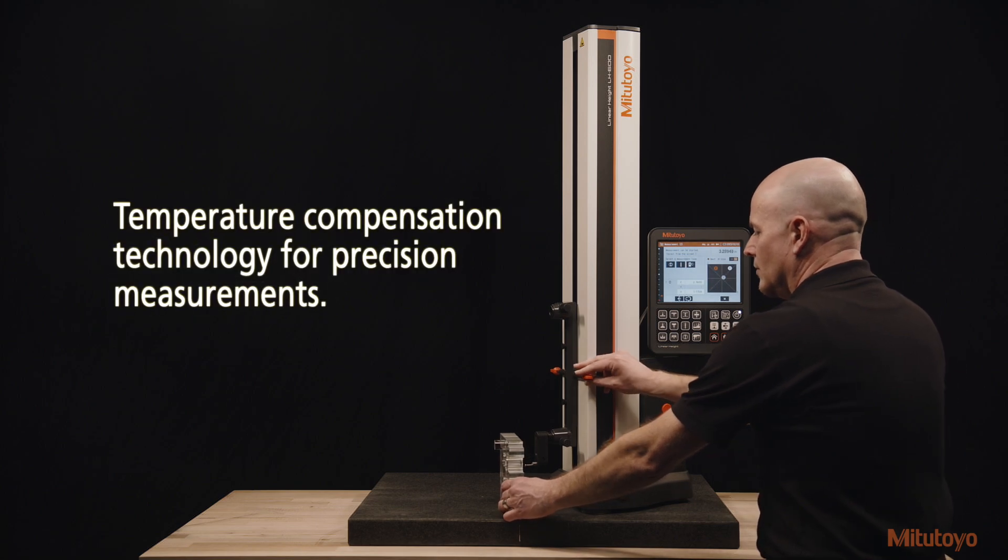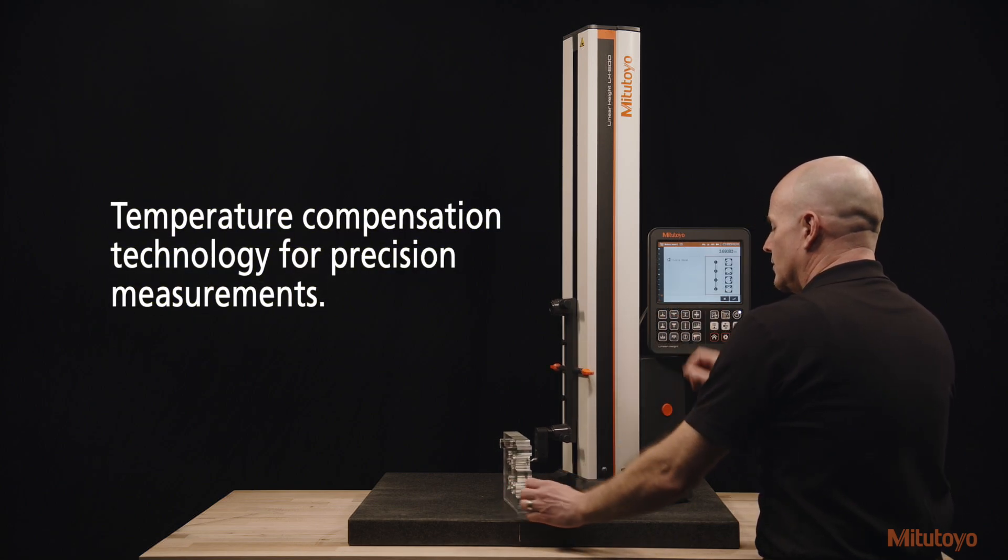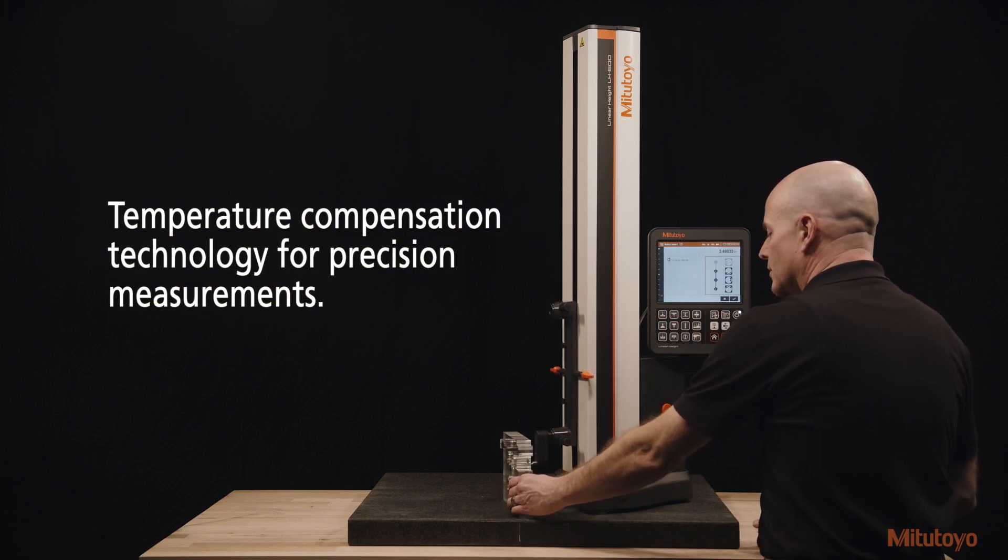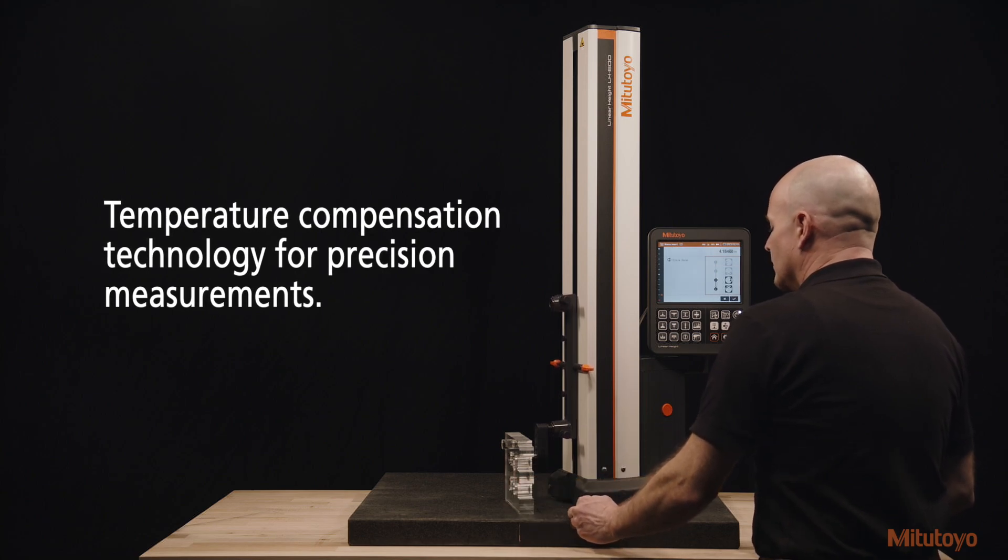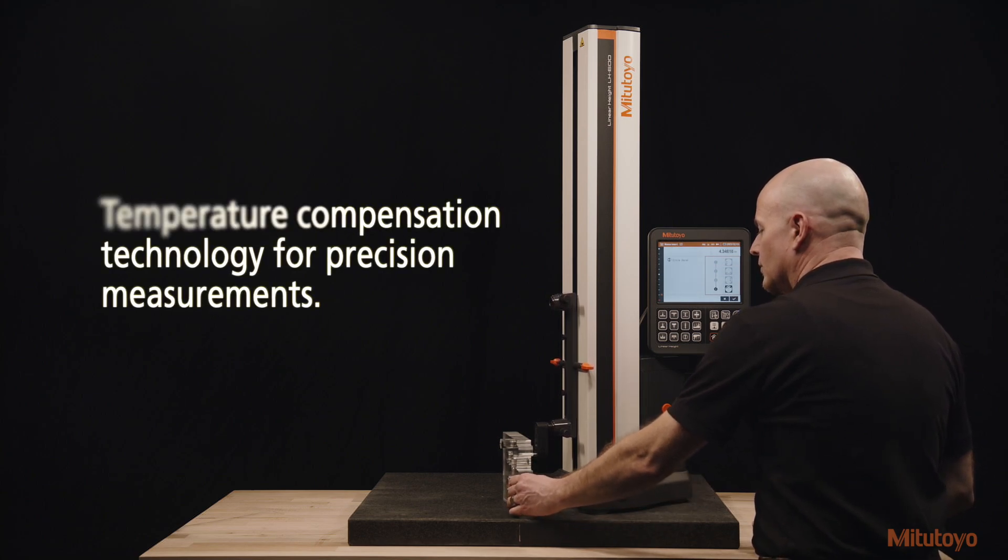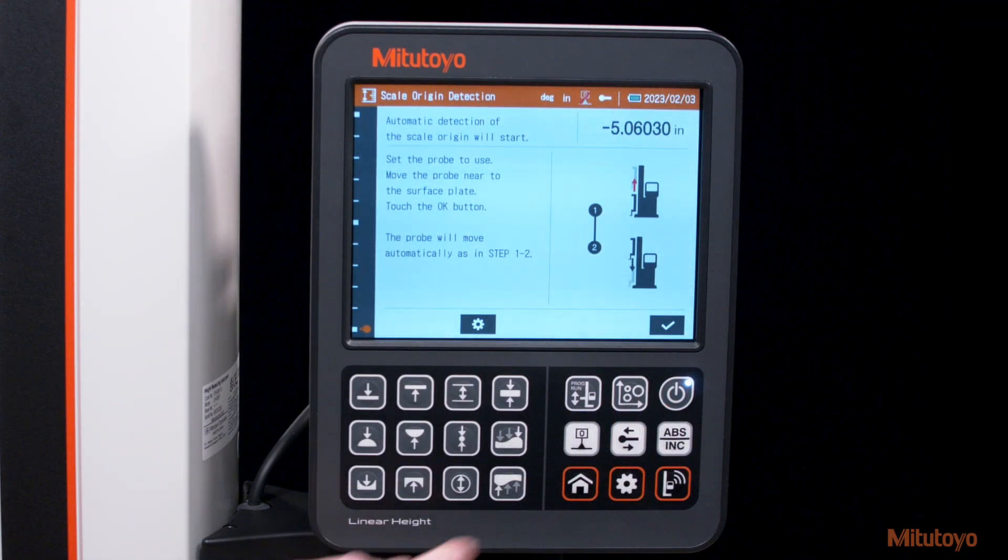Temperature compensation technology further maintains the LH600F's high accuracy despite environmental changes, which is crucial for precision measurements outside a quality control lab.